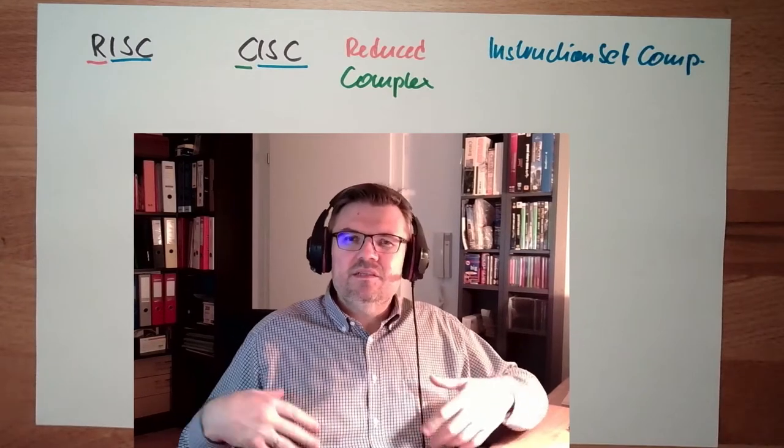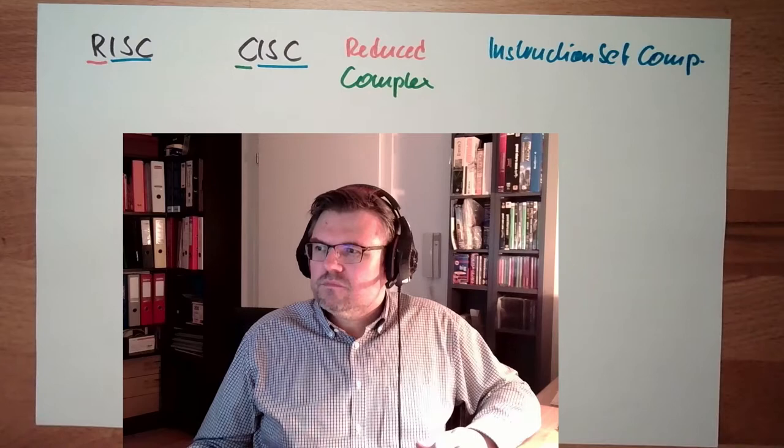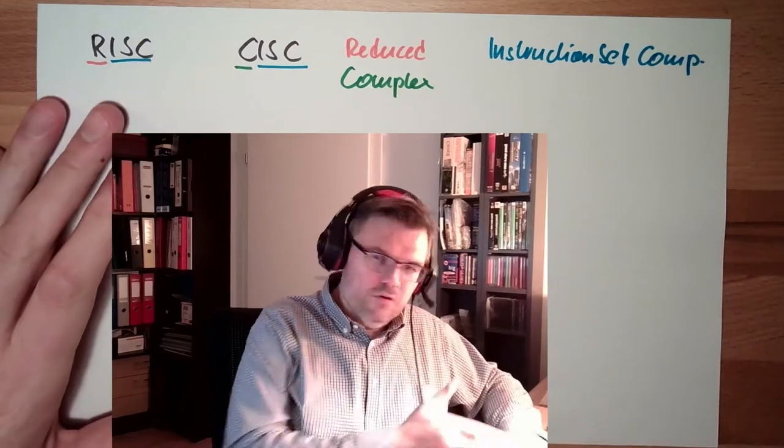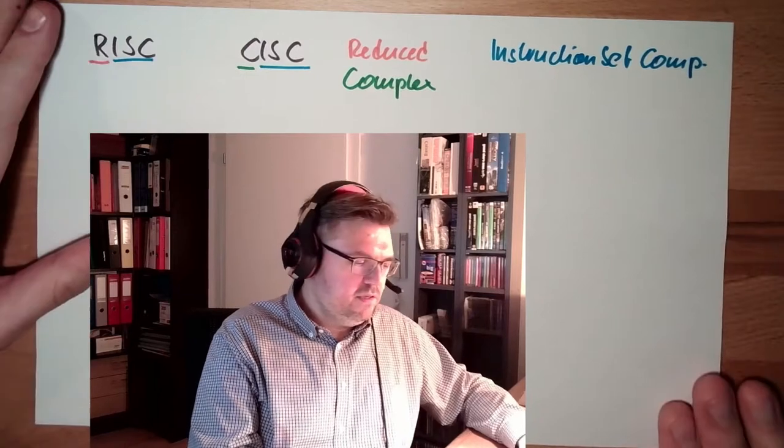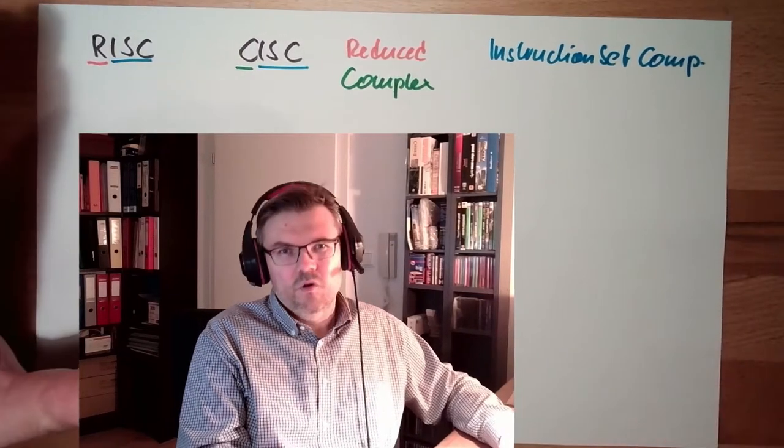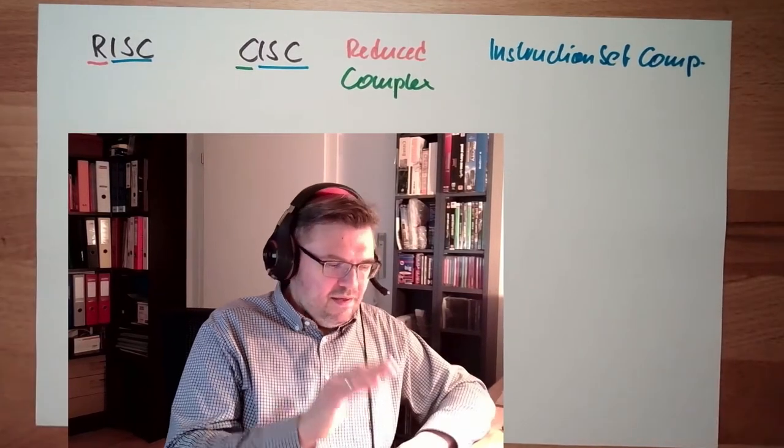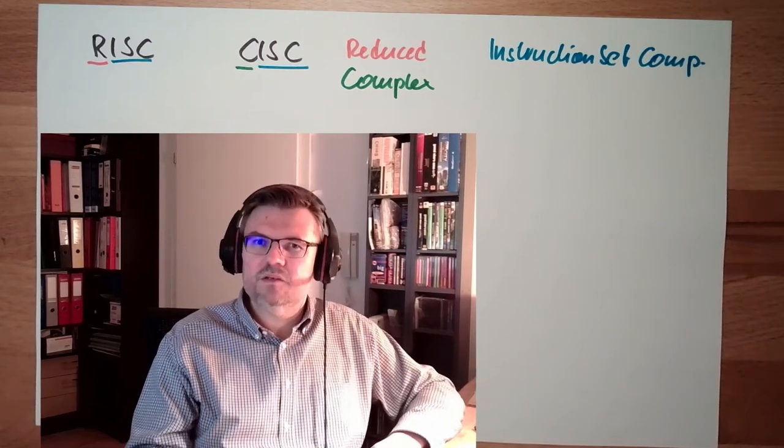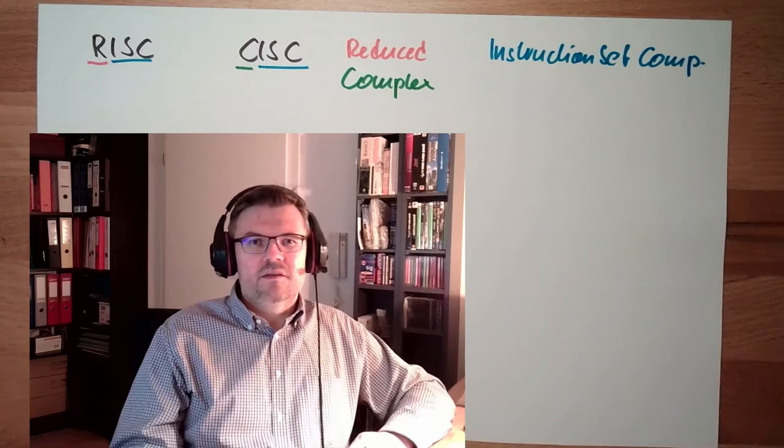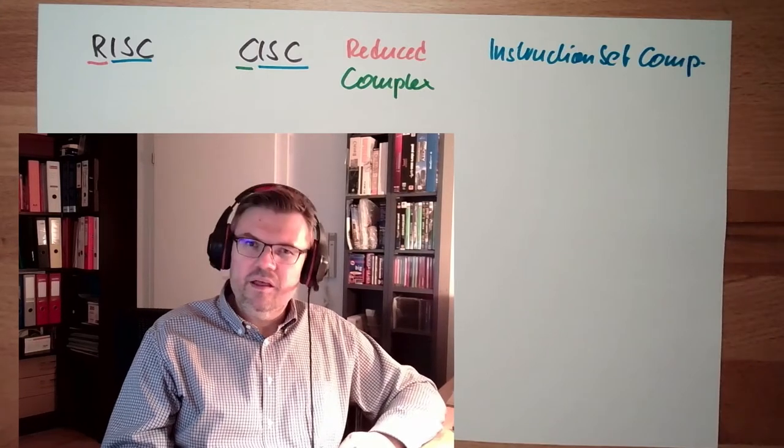Newer processors tend to have a little bit more instructions than older ones because the complexity is simply increasing. There is not a sharp boundary. What is RISC and what is CISC? There are definitions, but they are not that important for us because we are not computer scientists, we are mechanical engineers.